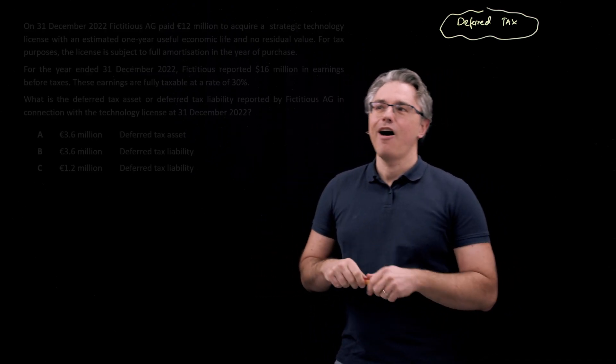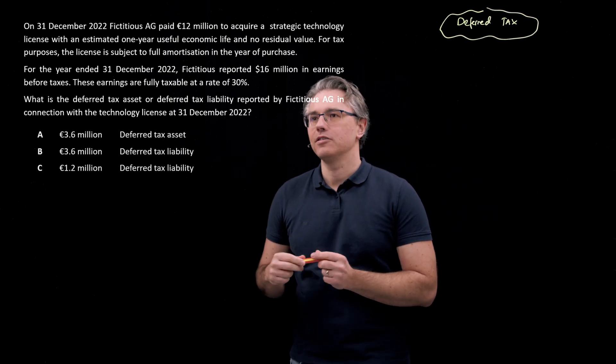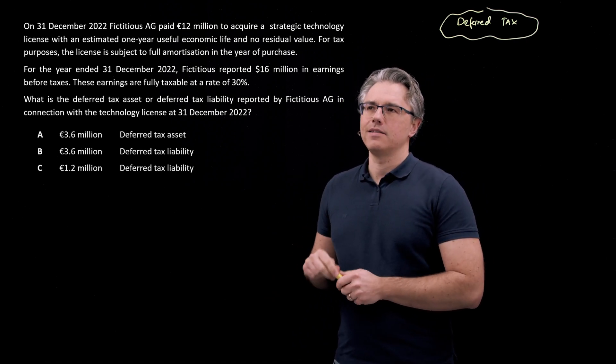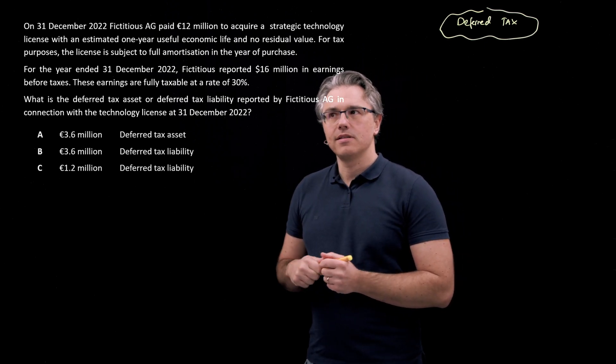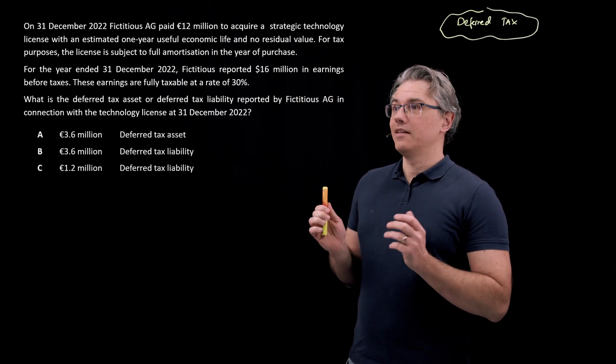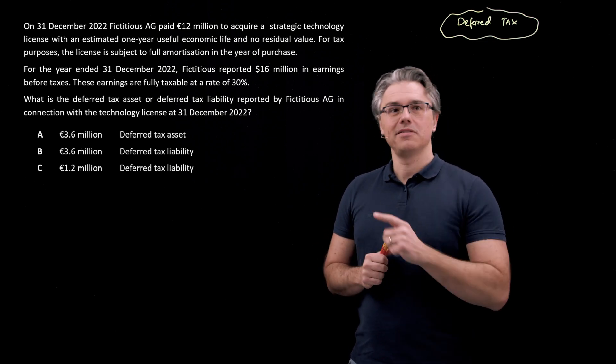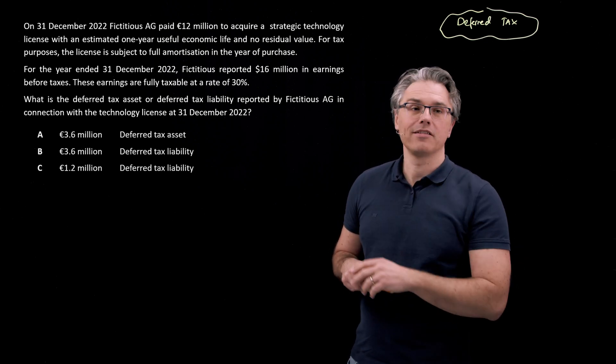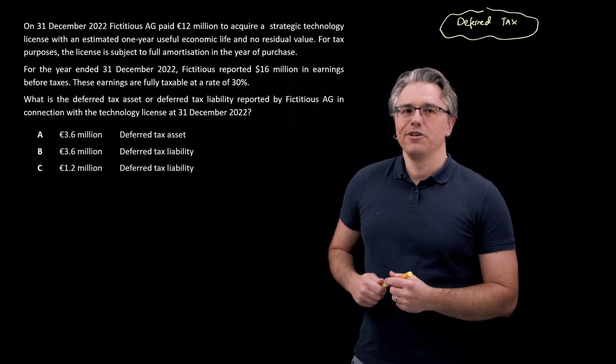On the 31st of December 2022, fictitious AEG paid 12 million euro to acquire a strategic technology license with an estimated one year useful economic life and no residual value. For tax purposes, the license is subject to full amortization in the year of purchase, which means that on the 31st of December 2022, you'll be able to recognize it fully as a tax deductible expense. Something that will obviously lower your tax bill.